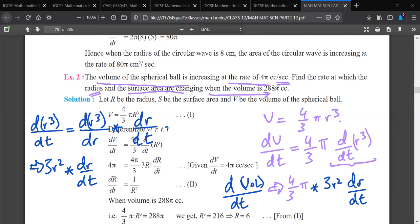Here about my question. Find the rate at which the radius and the surface area are changing when the volume is 288π cm³. Okay, oh, what are they asking? Sir, they're asking dr/dt. Yeah, yeah, okay.